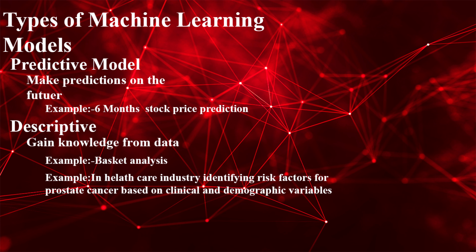Types of machine learning models. The first one is the predictive model. These models are going to be predictive in that they are trying to make predictions on the future. An example is a six-month stock price prediction, which we would do on the basis of company performance measures and other economic data.